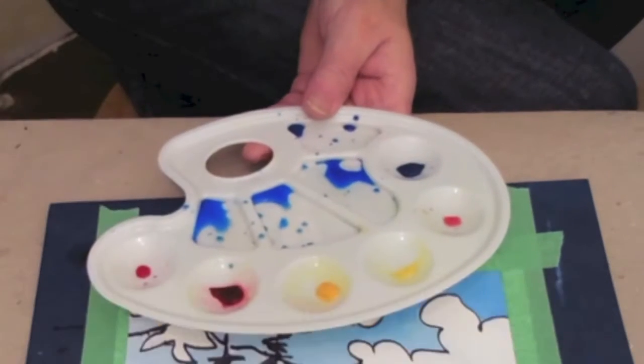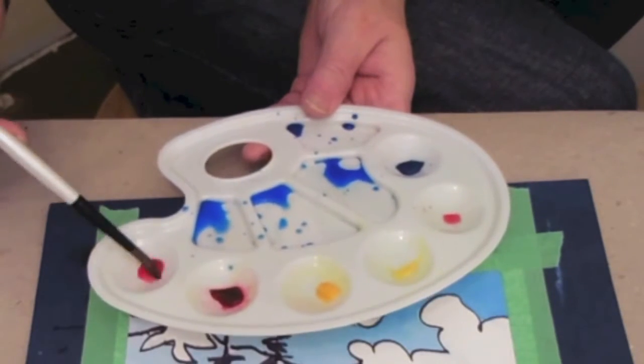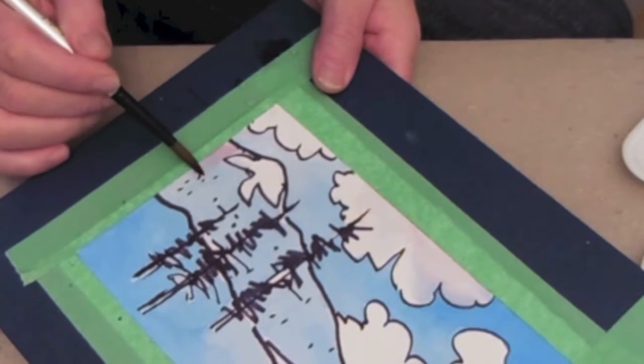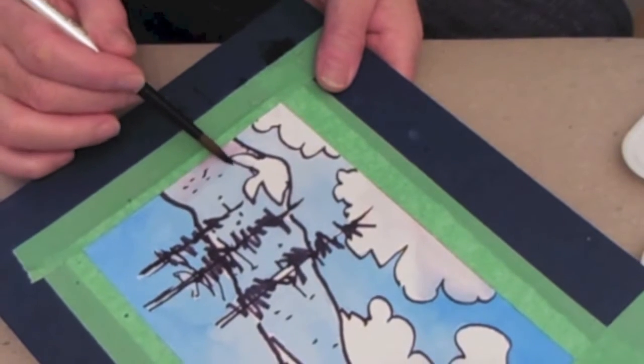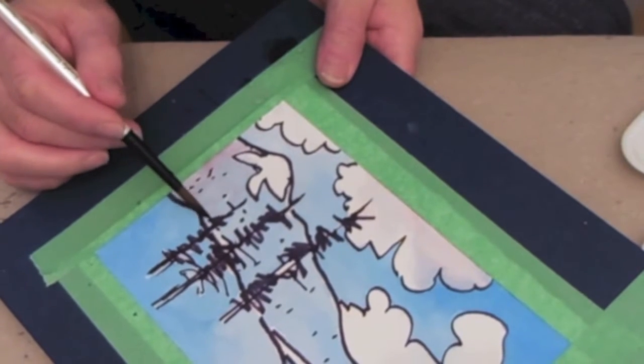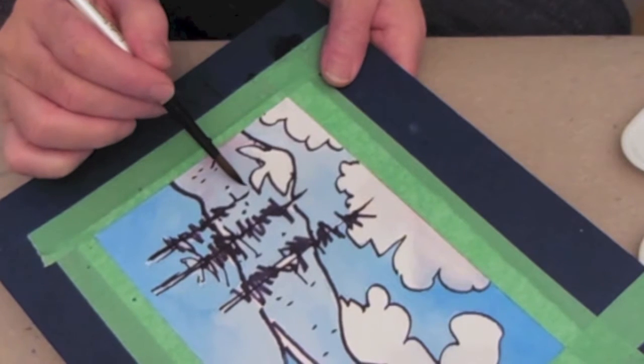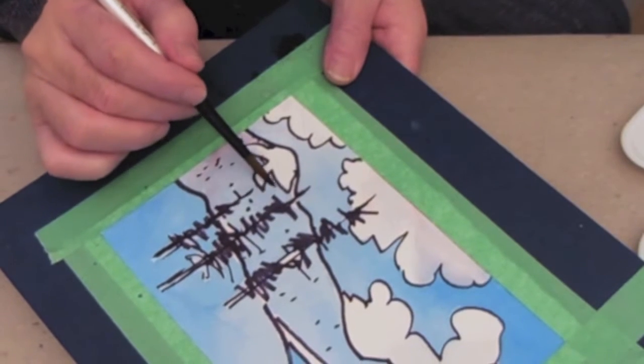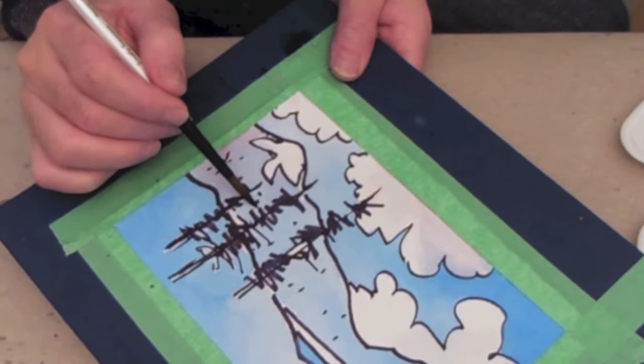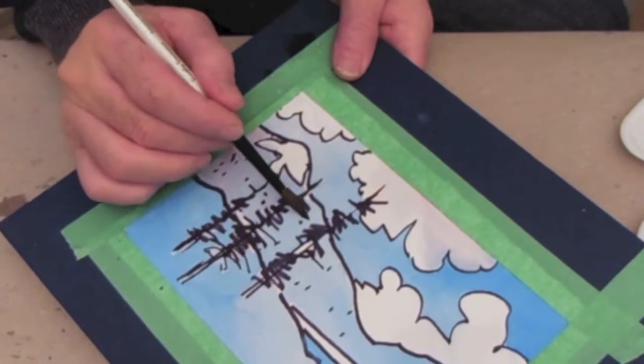I'm going to take some of this alizarin crimson and really thinly. Now I'm going to add this little wash here. Very gently. And I'm going to do a little pepper stroke at the end. I'm not going to use any more water. Just a little pepper stroke like that.